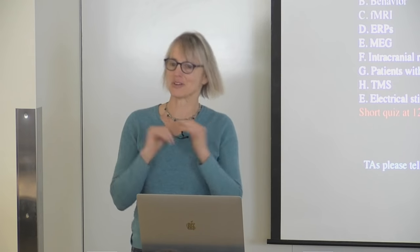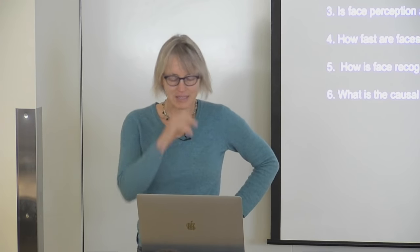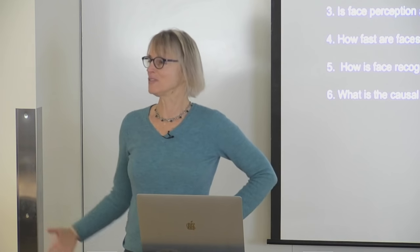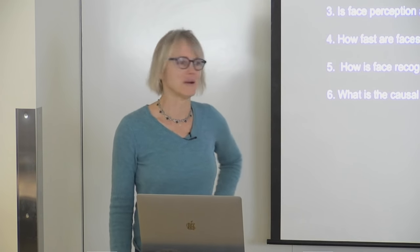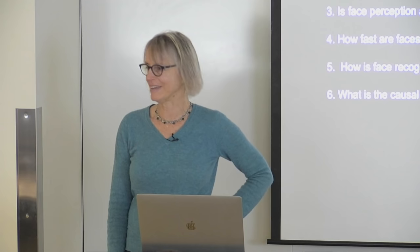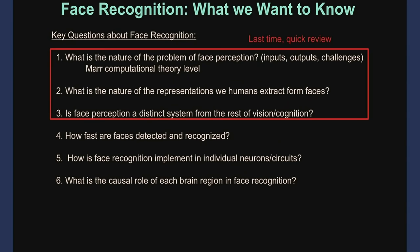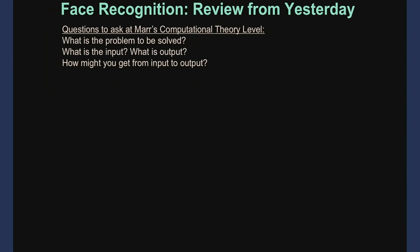Last time I listed a bunch of questions — not all of them, but a bunch of questions one would really want to know about face perception if we were to understand how it works in the brain. And last time we focused on the first three. Questions at the level of Marr's computational theory: what is the problem being solved, why is it important to the organism, what is the input, what is the output, and how do you get from that input to that output?